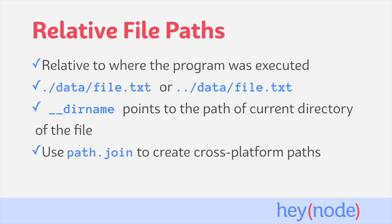Path is a module that helps us deal with file paths. Specifically, we can use the path module's join method to build file paths when using fs. Path.join also creates cross-platform file paths, so if our code runs on a Windows machine, we don't have to worry about the different path constructions on Unix systems versus Windows systems.